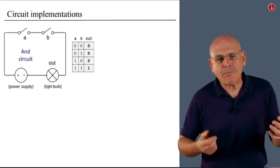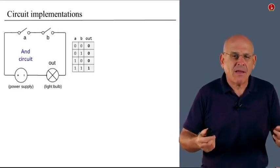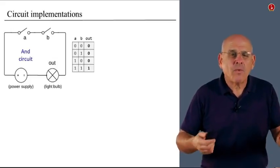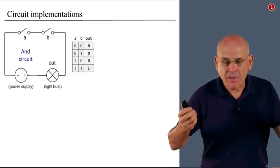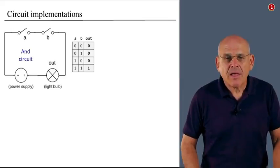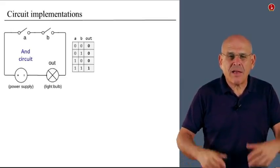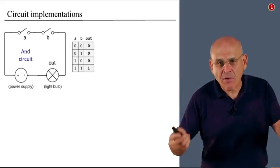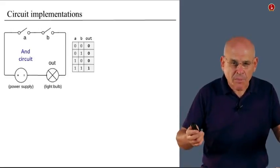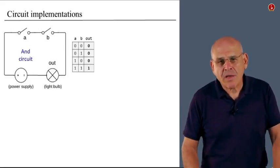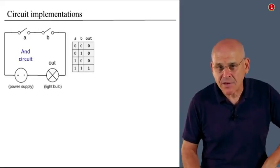When we want to represent the fact that the gate outputs one, we assume that a light bulb will be turned on. And when the gate delivers output zero, the light bulb will be off.